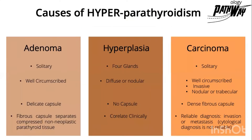We will discuss the three main causes: adenoma, hyperplasia, and carcinoma. How to differentiate between them? Adenoma is usually found in one gland, while hyperplasia can affect more than one gland — usually all four glands. Carcinoma usually affects one gland. Adenoma is well circumscribed and separated from the normal parathyroid gland by a thin, delicate capsule. Hyperplasia can be diffuse or nodular. Carcinoma is well circumscribed but characterized by its invasive nature, and can be nodular or trabecular.